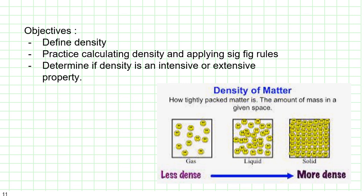So a quick review of our objectives. Hopefully we accomplished these today. Hopefully you can define density. Density is the amount of mass in a given space. How tightly packed our matter is. Calculated density. Remember that is mass over volume. We definitely practice some sig figs. And you are noodling on is density intensive or extensive.